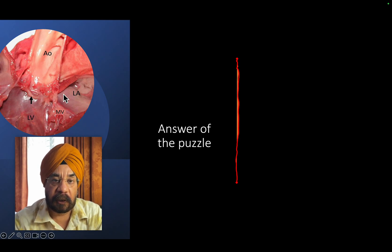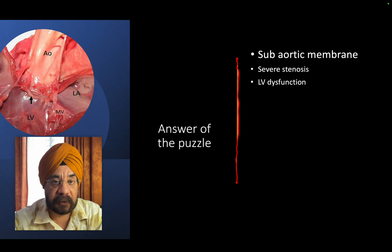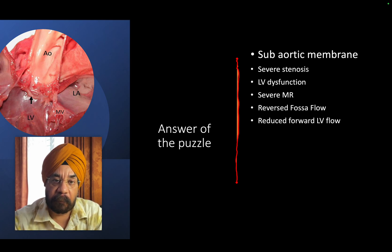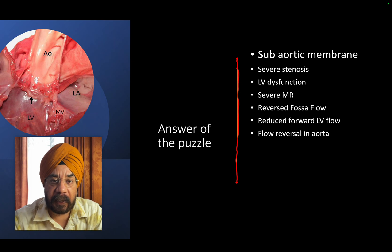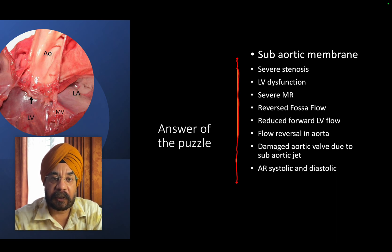Let's sum up the entire case. We have a sub-aortic membrane, which led to severe stenosis, which led to LV dysfunction, which led to severe mitral regurgitation. This reduced forward flow through the left ventricle - reduced LV outflow - caused reversal of flow in the aorta. The aortic valve was damaged by the high-velocity sub-aortic jet, causing aortic regurgitation, leading to flow reversal in both systole and diastole. This was a very unusual case, and hemodynamic dissection proved very useful.